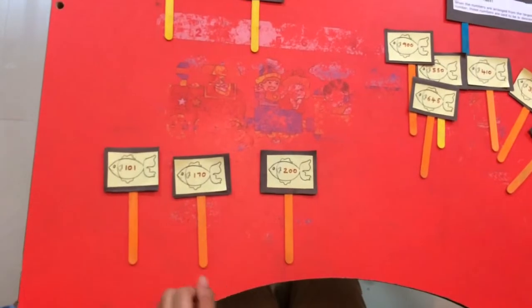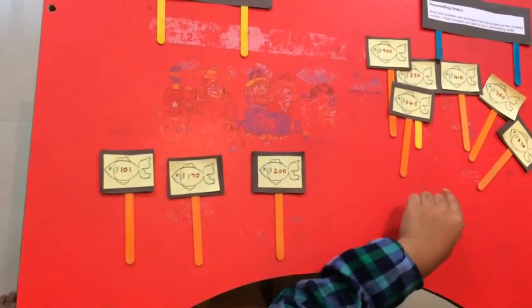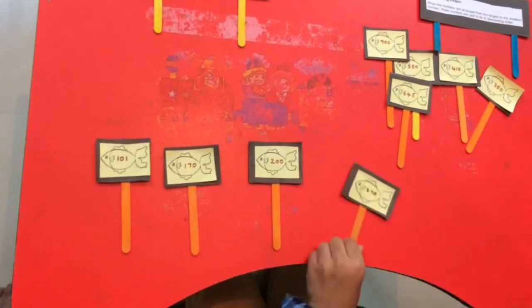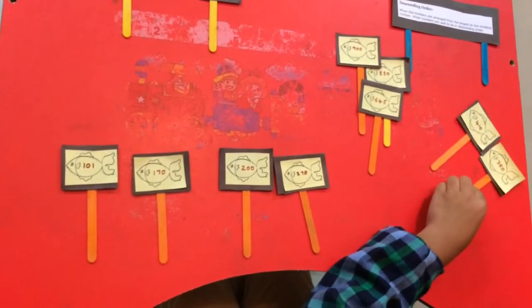Can you tell the numbers? 170, 200, then 270, then 350.